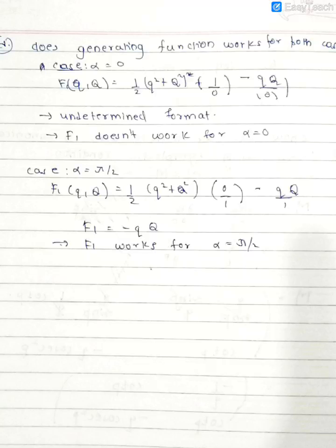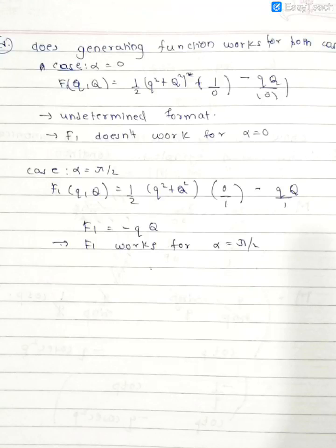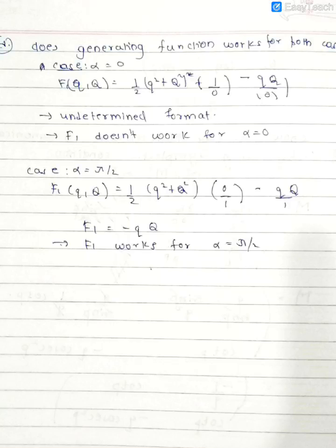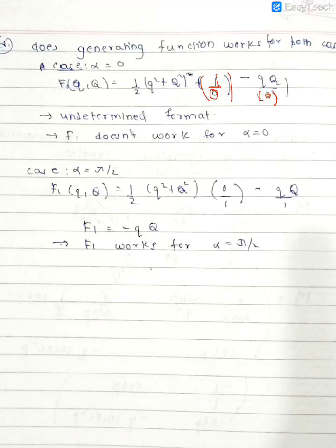Now we have to see does this generating function work for both of the angles. When I put alpha equals 0, I get 1 by 0, which is an undetermined format. So the given generating function won't work in such cases. We have to go with some other generating function, let's say F2 or F3 in that case.